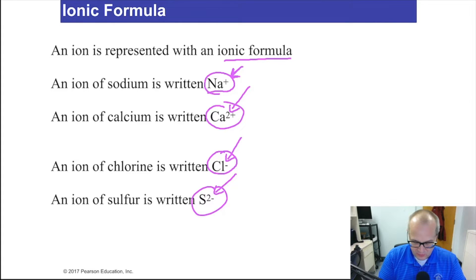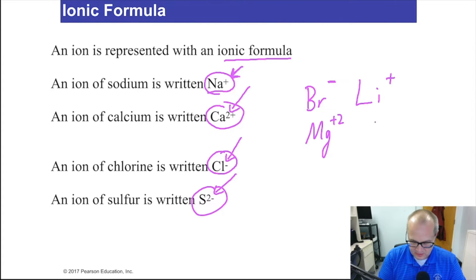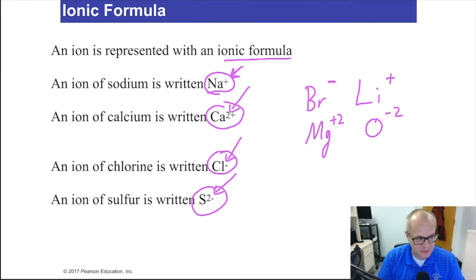For example, if I wanted to write bromine as an ion, there you go. Lithium as an ion, there you go. Magnesium as an ion. Oxygen as an ion — you write the negative 2 there, or positive, or whatever number it needs, and we'll figure out in a minute how to decide what number it needs. That's how you write ionic formulas.